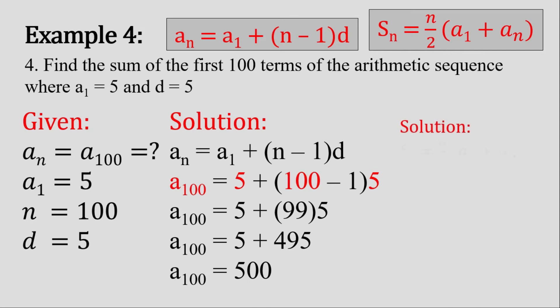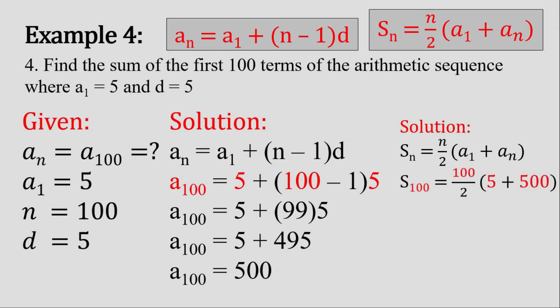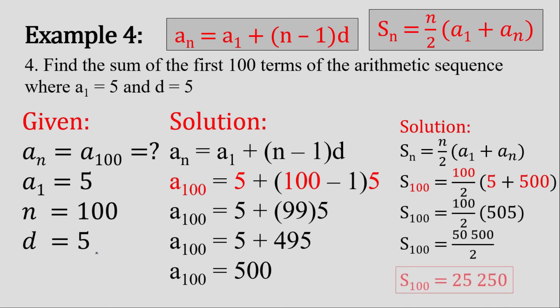Now we have a sub 1 and a sub 100, so we can find the sum of the first 100 terms. We substitute all values into the arithmetic series formula, simplify, and we get the answer of 25,200.